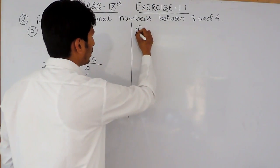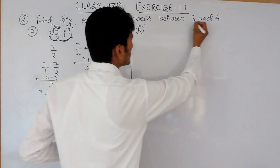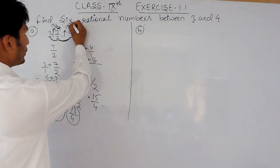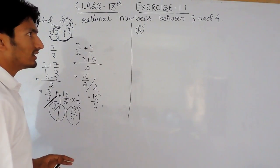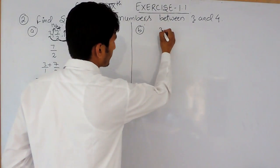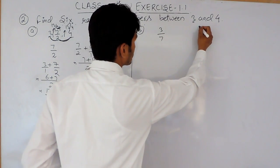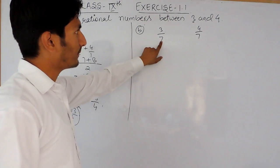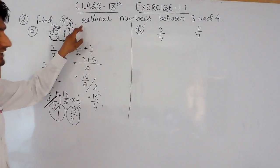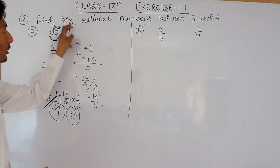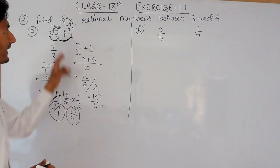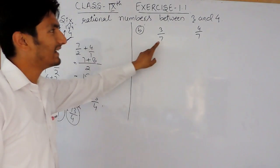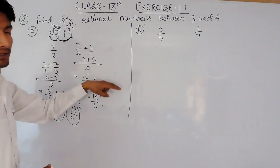There is another method of finding rational numbers between 3 and 4, or between any two numbers. Here you have to find 6 rational numbers, so you divide by 7, that is 6 plus 1 — always one more than the count of rational numbers you need. If you want to find 8 rational numbers, you divide by 9, that is 8 plus 1.